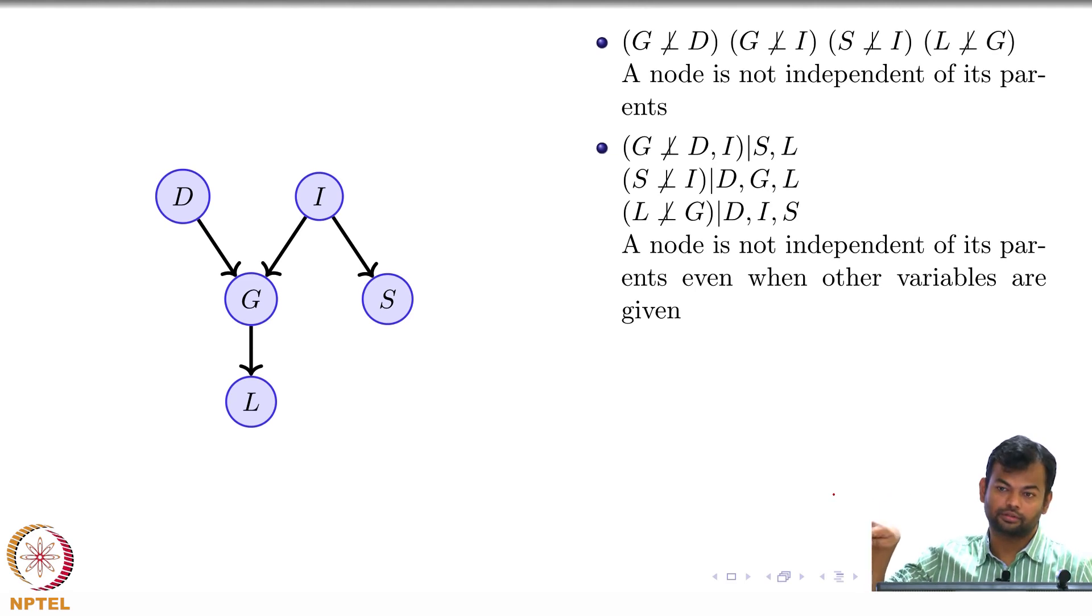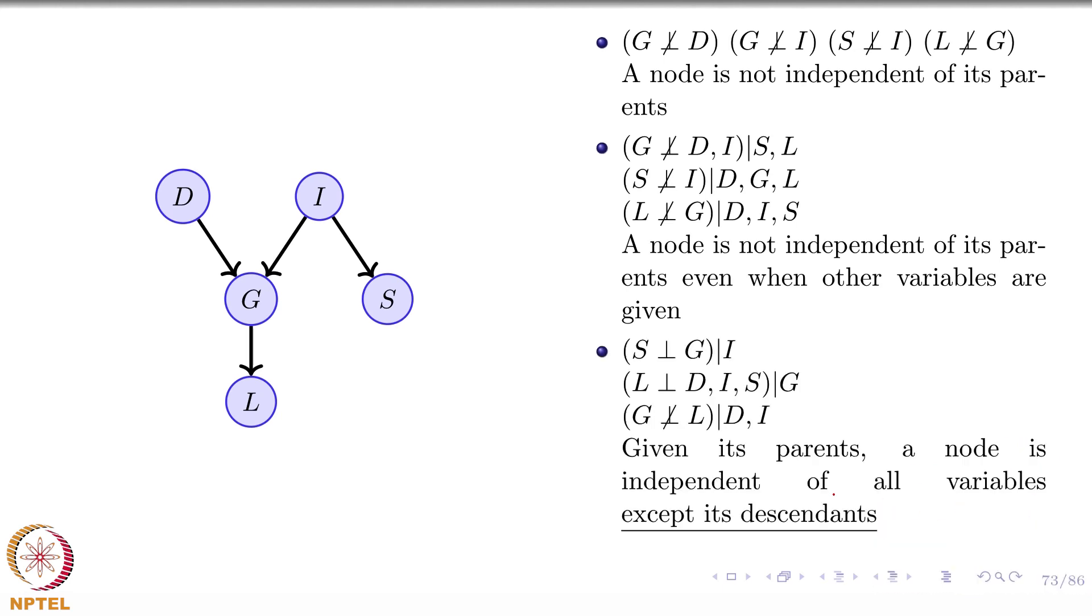What is the last rule? A node is independent of other variables given its parents. I want you to replace that 'other variables' by something: a node is independent of its non-descendants given its parents. Given its parents, a node is independent of all variables except its descendants.